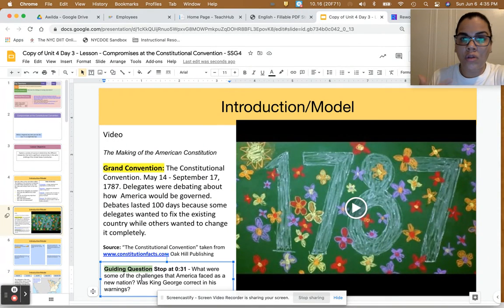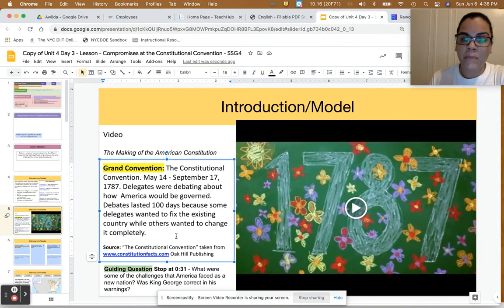The purpose of that question is to have students reflect on the lesson from the beginning of Unit 4, where King George, in the song that they analyzed, gave the New America a warning.